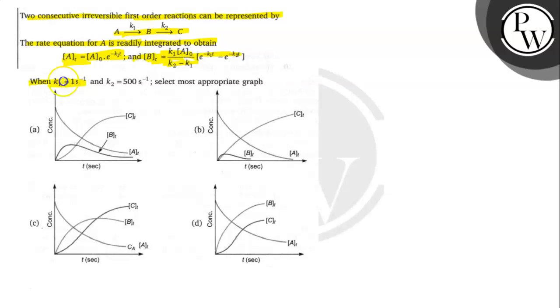When K1 is equal to 1 s⁻¹ and K2 is equal to 500 s⁻¹, then select the most appropriate graph.